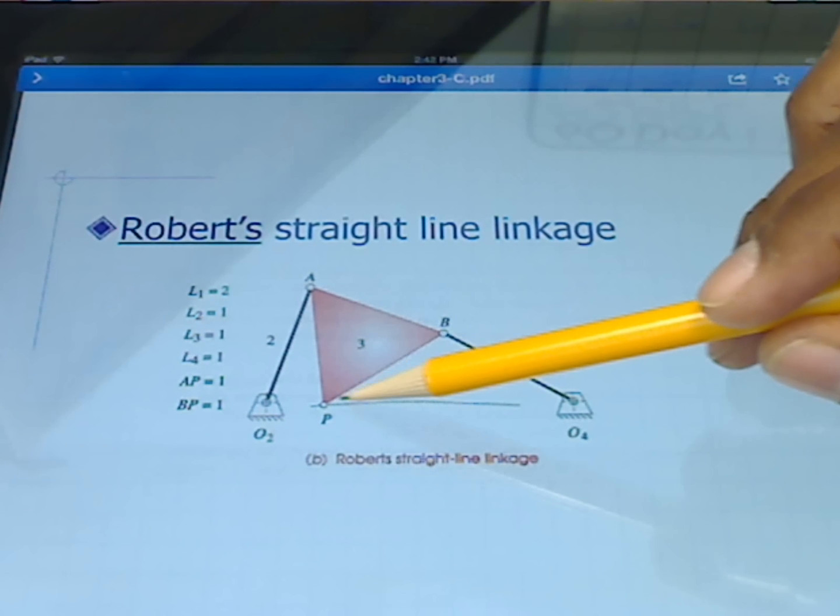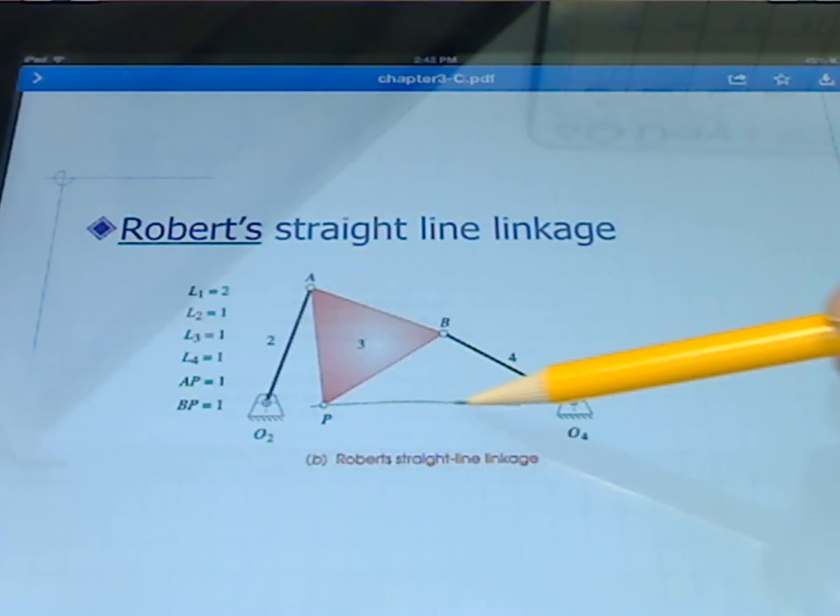Notice that this line, this dotted line that the coupler point's going to follow kind of bends up and goes back down. So again this is not a perfectly straight line but for many applications, for many machines, this would be straight enough. It's really dependent upon your application.